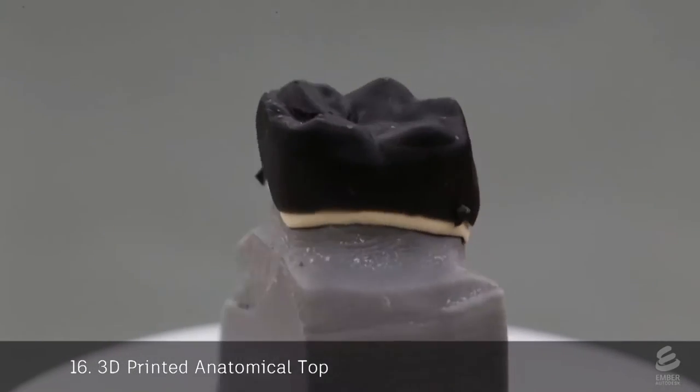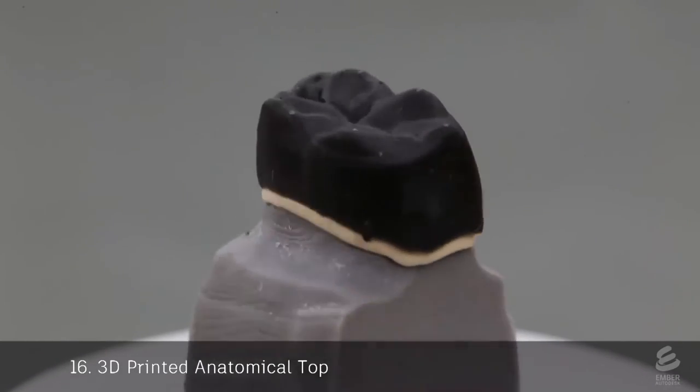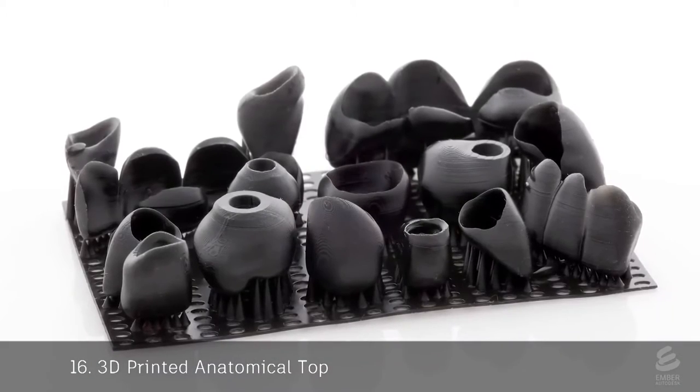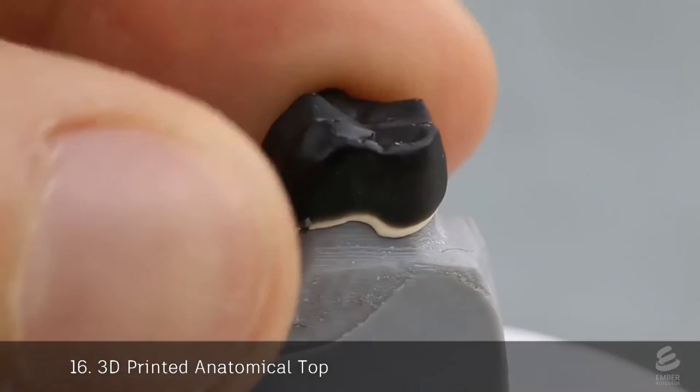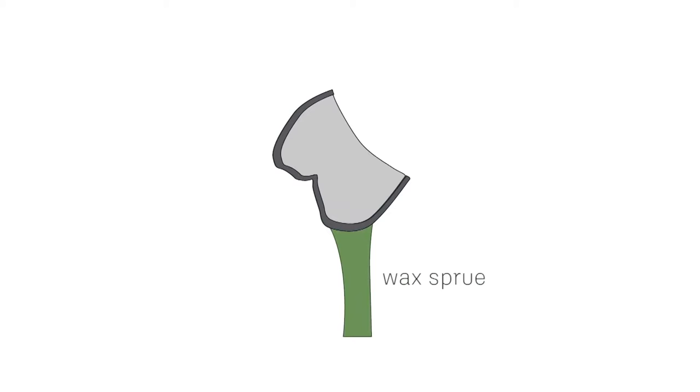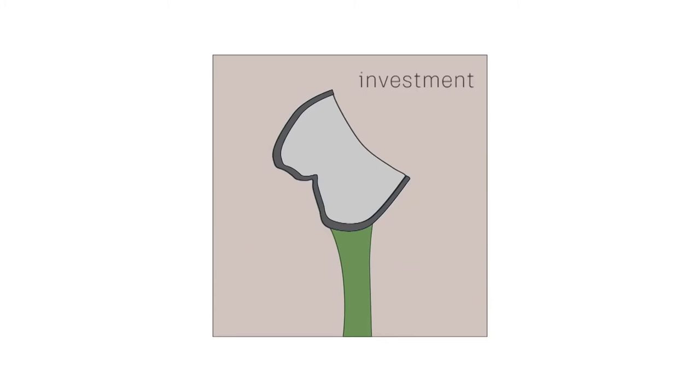To create the porcelain layer, an anatomical top is first 3D printed on Ember in castable resin. The top slides onto the opaque casting. The casting and top are then attached to a wax sprue. The part is surrounded again with liquid investment.